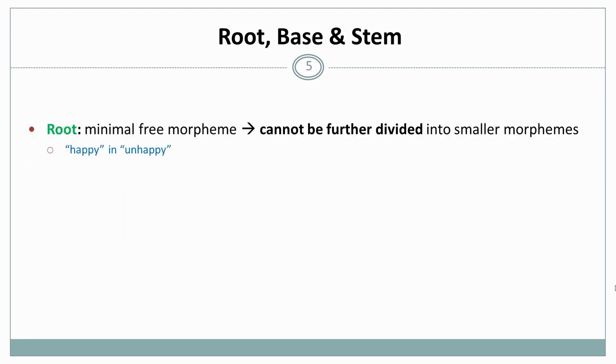Three other very important notions in morphology are root, base, and stem. The root is the minimal free morpheme; it cannot be further subdivided into smaller morphemes. So for example, happy in unhappy would be a root because we cannot divide happy into more morphemes that actually have a meaning.